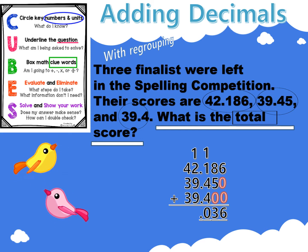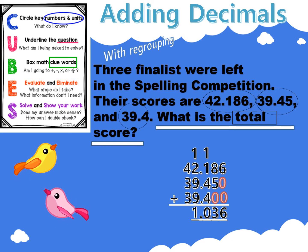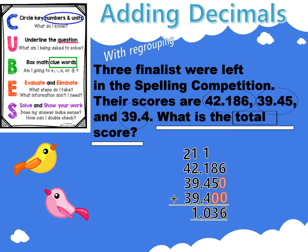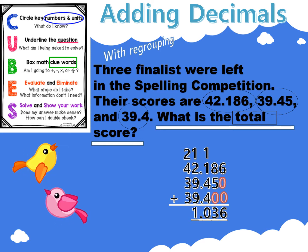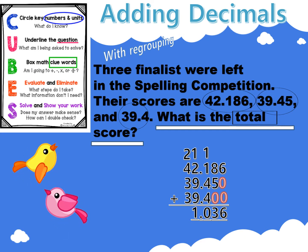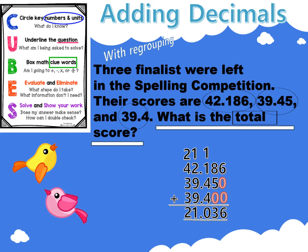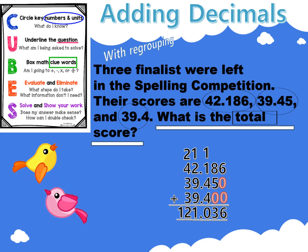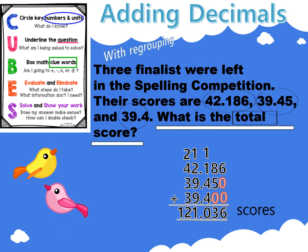One one plus two ones plus nine ones plus nine ones equals twenty-one ones. Regroup twenty-one ones as one one and two tens. Place your one under your ones column. Carry your two tens above your tens column. Two tens plus four tens plus three tens plus three tens equals twelve tens. Regroup twelve tens as two tens and one hundred. Place your two tens under your tens column and your one hundred. The total score is 121 and 36 thousandths.